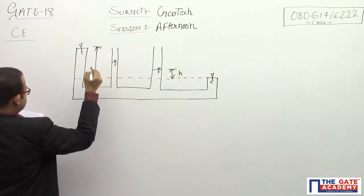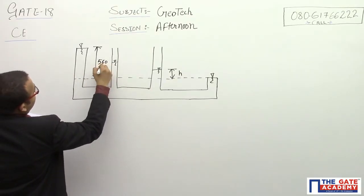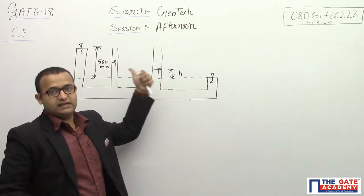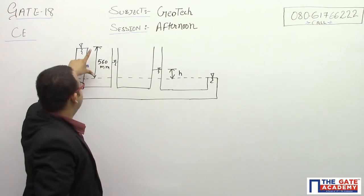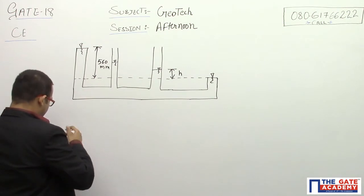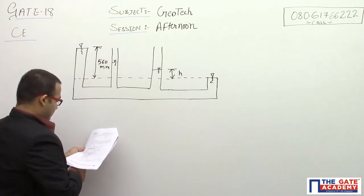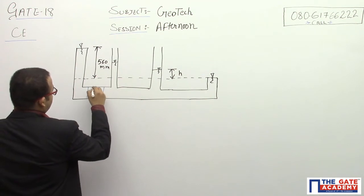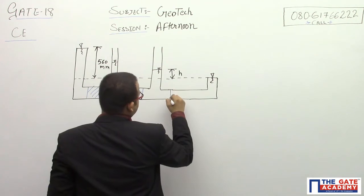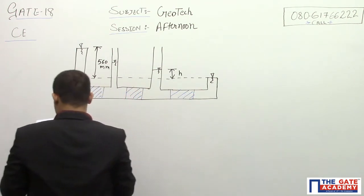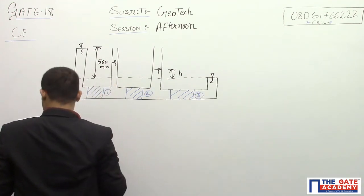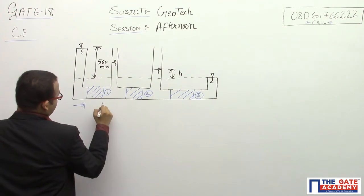The total head difference given is 560 mm — this is the initial head and this is the final head; the total head loss is 560 mm. In the figure, soil number 1 is here, soil number 2 is here, and soil number 3 is here. The length of each soil sample is 150 mm.